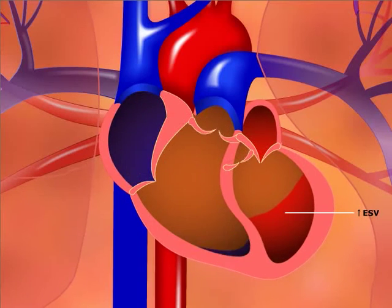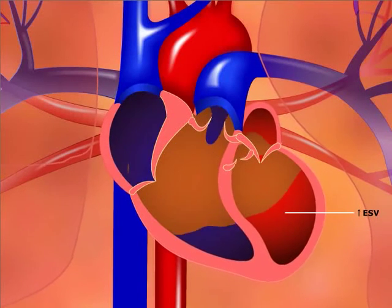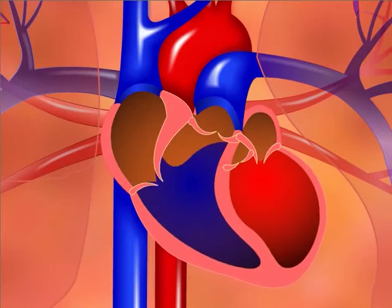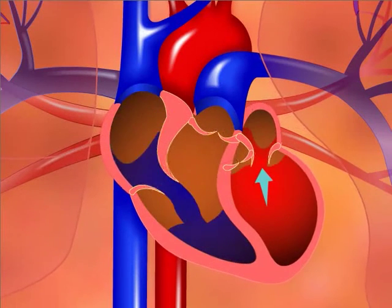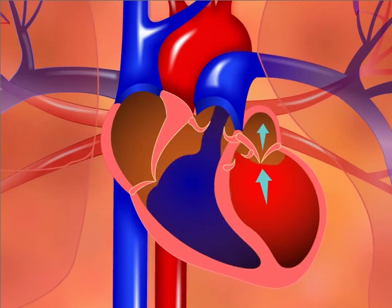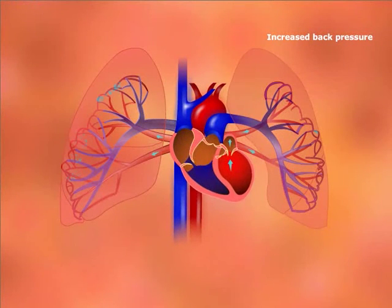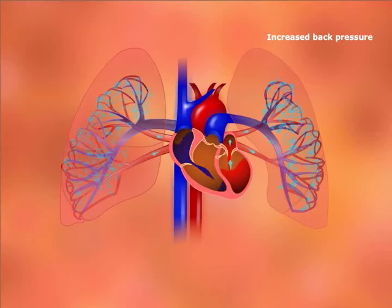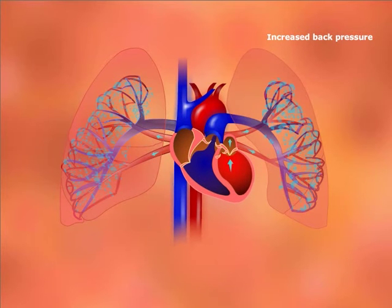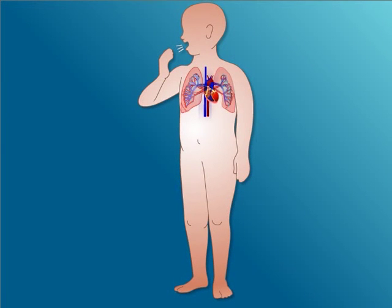Since the heart is not ejecting enough blood, the end systolic volume will be abnormally elevated. This will increase the pressure within the ventricle. This increase in pressure backs up to the left atrium, then the pulmonary veins, and further to the lungs. The increased pulmonary capillary pressure favors fluid extravasation, causing pulmonary edema, which impairs ventilation. This pathogenesis explains why left-sided heart failure presents with respiratory symptoms such as cough, shortness of breath, and orthopnea.